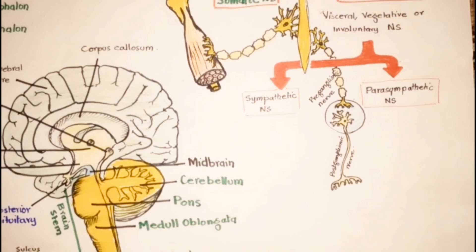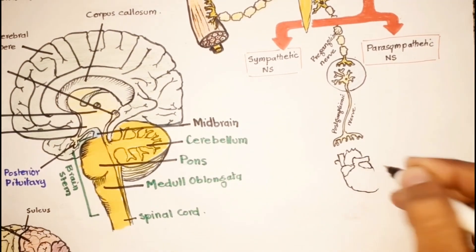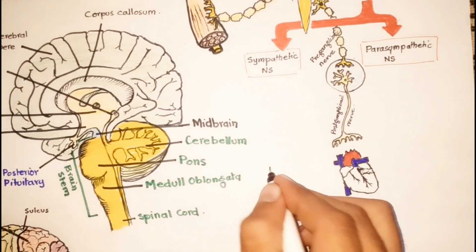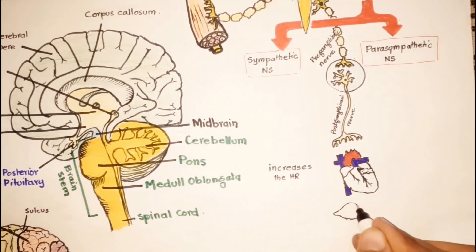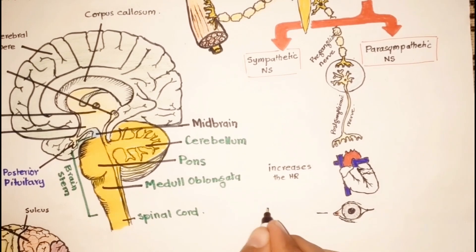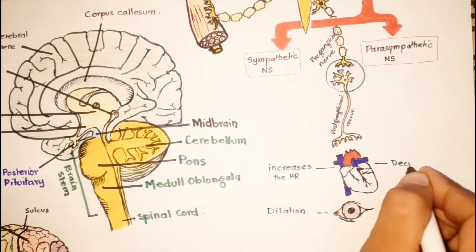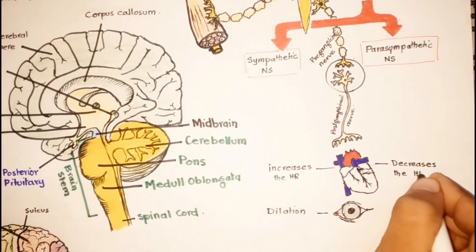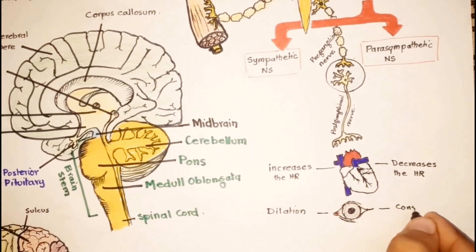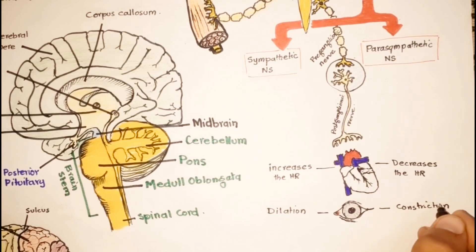These two divisions are involuntary but completely opposite to each other. For example, the sympathetic nervous system increases the heart rate and dilates the pupil of the eye once stimulated. On the other hand, the parasympathetic system causes slowing down of the heart rate and constricting of the eye pupil.